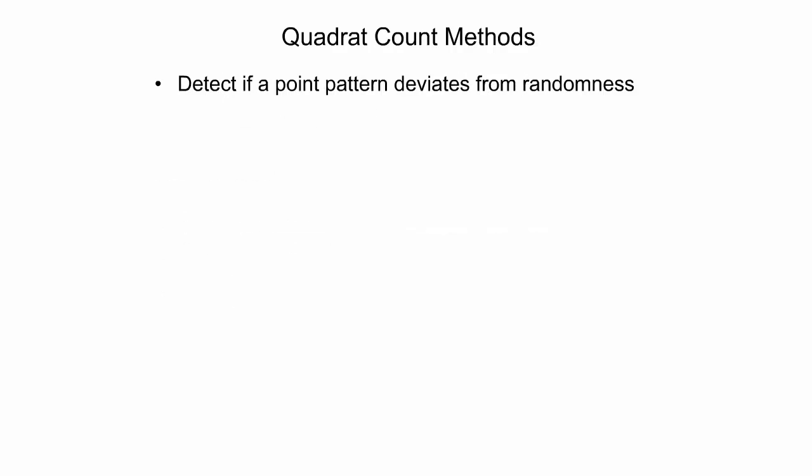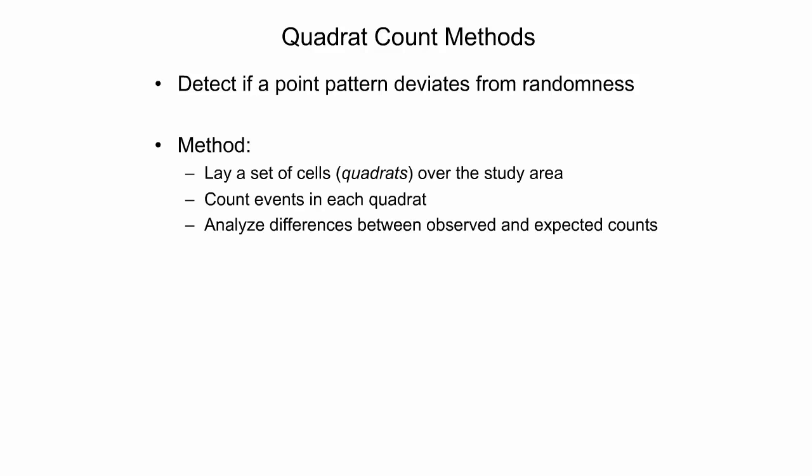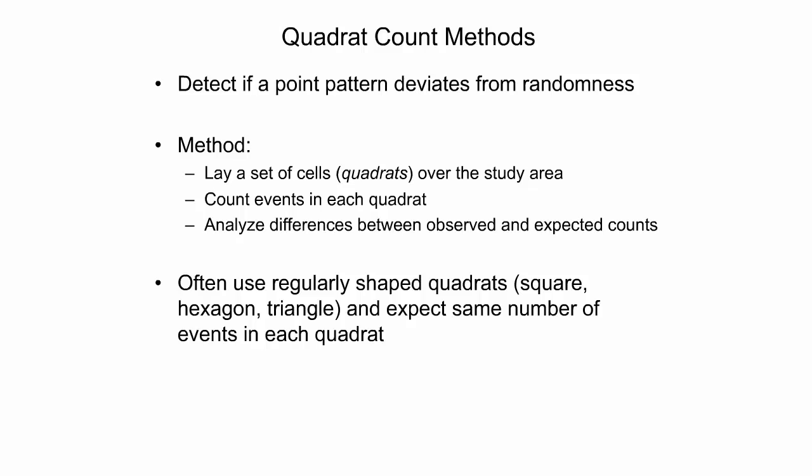Quadrat count methods aim to detect whether a point pattern deviates from spatial randomness. They do so by overlaying a set of cells called quadrats over the study area, counting the number of events in each quadrat, and analyzing the differences between observed and expected counts in quadrats. The shape, size, and arrangement of quadrats used for analysis can vary between different analysis approaches.